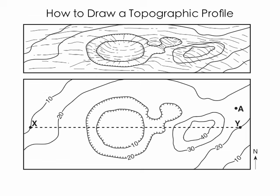Again, take a look at the map and familiarize yourself. You will see that we have some contour lines which are labeled and we also have a dashed line connecting points X and Y. Now that is the line along which we're going to draw our profile.